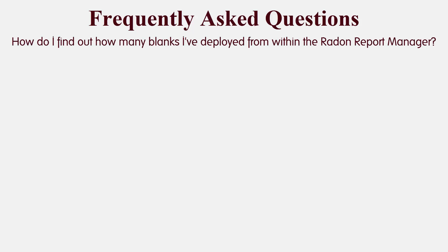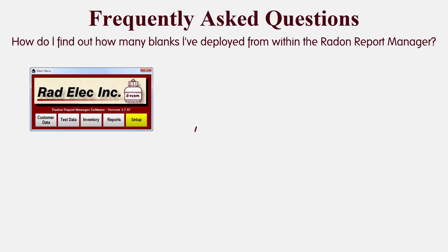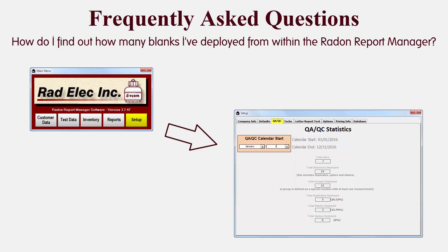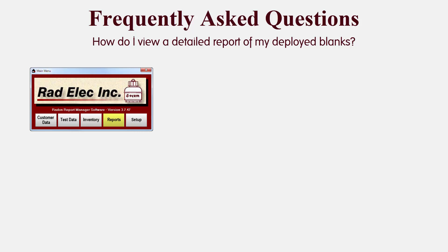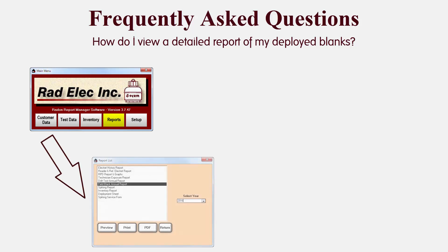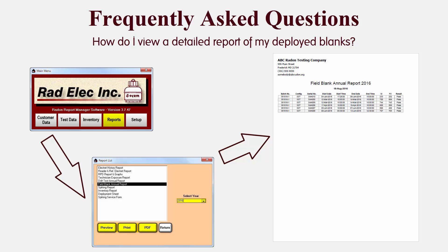How do I find out how many blanks I've deployed from within the Radon Report Manager? To see how many blanks you've deployed, go to the main menu and click on the Setup button. Click on the QAQC tab and you'll be able to see how many blanks you've performed, in addition to spikes, duplicates, and total detectors deployed. For a detailed report of deployed blanks, click on the Reports button from the main menu, select Field Blank Annual Report from the list box, select the appropriate year in the drop-down box, and then preview, print, or create a PDF of the resulting report.